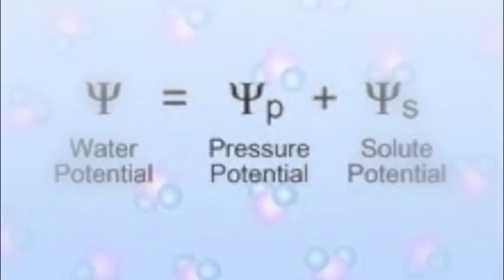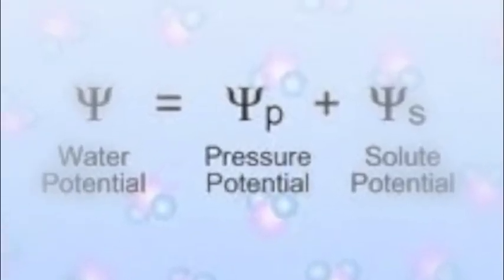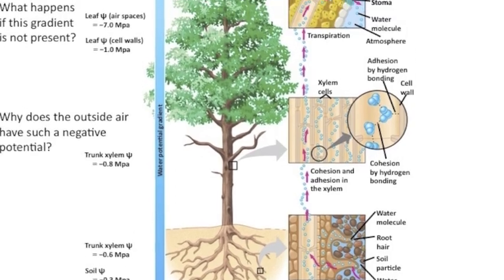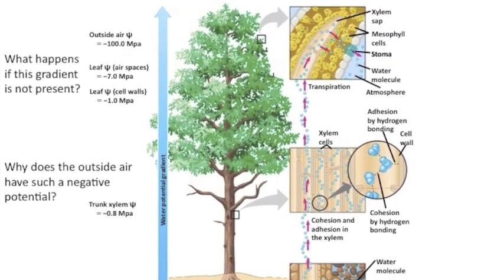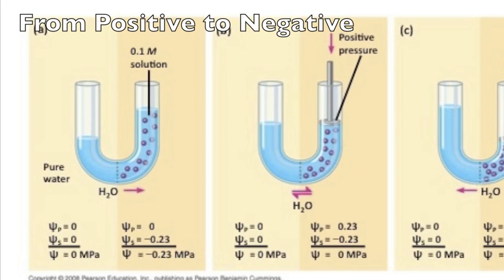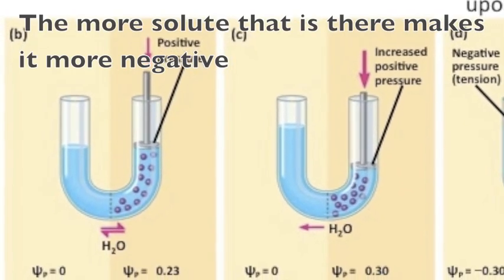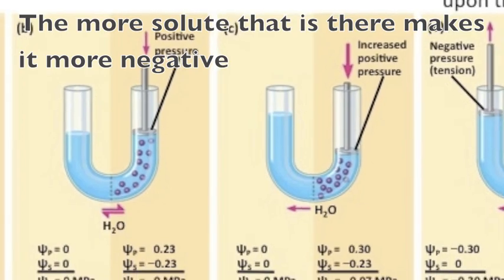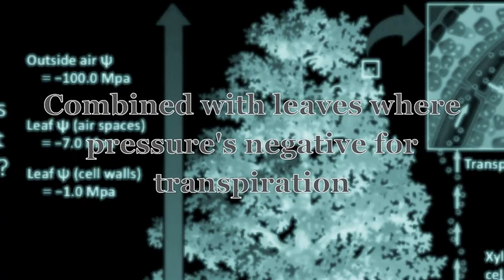Water potential moves water through the plants, helps water rise and fall from positive to negative. The more solute that is there makes it more negative, combined with leaves where pressure's negative for transpiration.